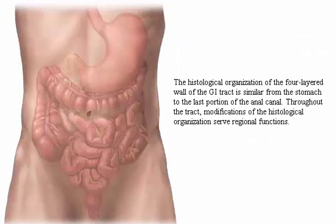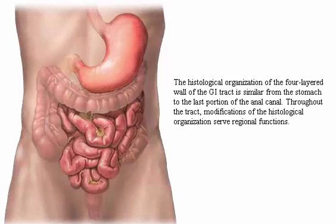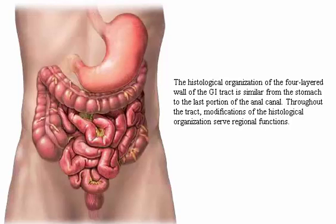The histological organization of the four-layered wall in the GI tract is similar from the stomach to the last portion of the anal canal. Throughout the tract, modifications of the histological organization serve regional functions.